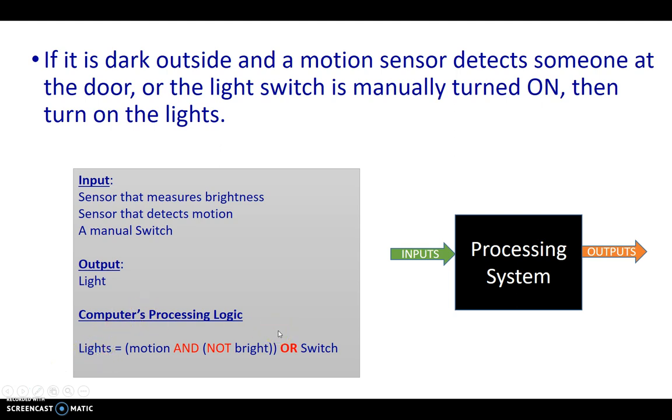Our computer's processing logic for this statement, which said if it is dark outside and a motion sensor detects someone at the door, or the light switch is manually turned on, then turn on the lights, was motion and not bright or switch.